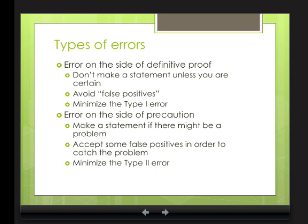This idea of finding the middle area where we need to be cautious is related to the types of errors we're willing to make when we make scientific statements. If we err on the side of definitive proof — meaning we really want to say something we can prove and provide all sorts of evidence for — we don't want to make a statement unless we're really certain about it. This type of proof avoids false positives, and in statistical language, it minimizes the Type 1 error.